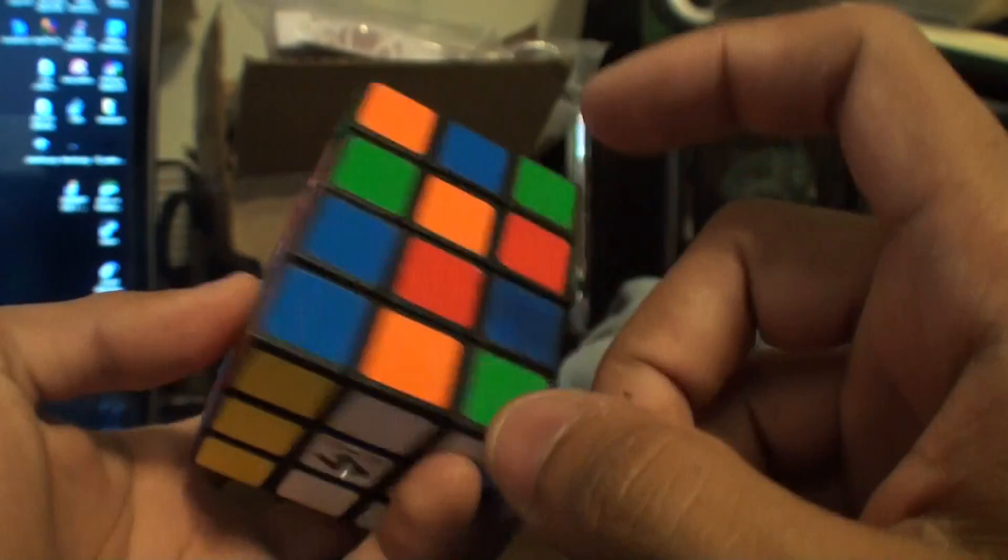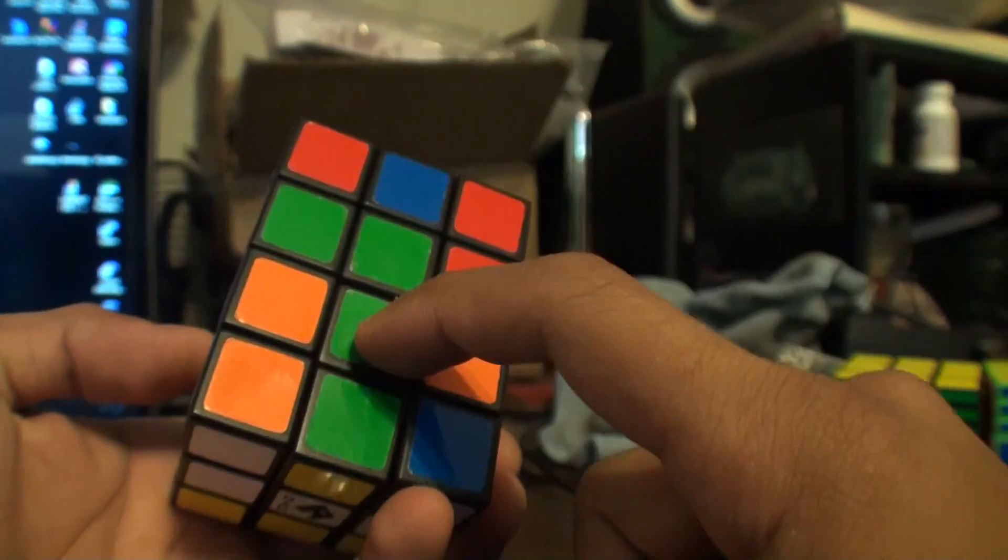Next, you know on the opposite of orange is red. So we have red there. That's good. And then we have green right here. So that's good.